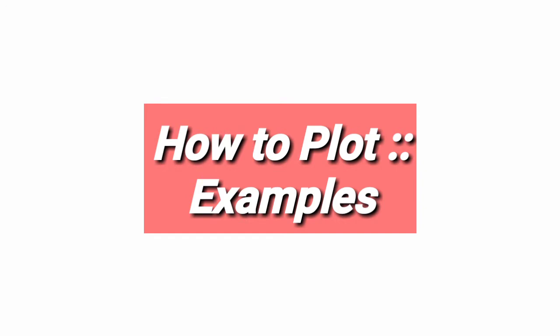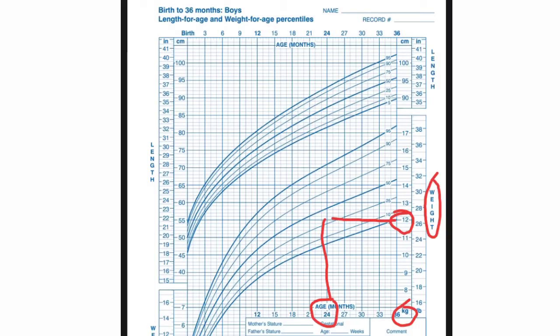Now let's look at examples of how to plot. Suppose we have a boy aged 24 months whose weight is 12 kg. We select the blue chart for boys aged 0 to 36 months. On the x-axis we mark 24 months, on the y-axis we mark 12 kg, then we combine these lines and follow to the centile lines. The weight is falling between the 25th and 50th centile.